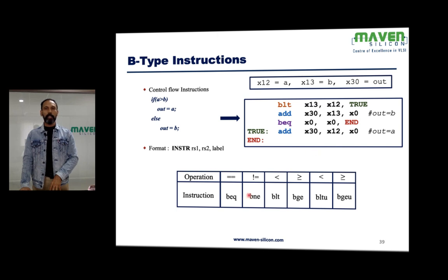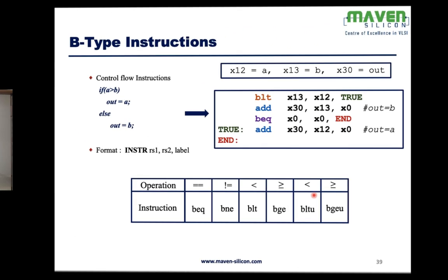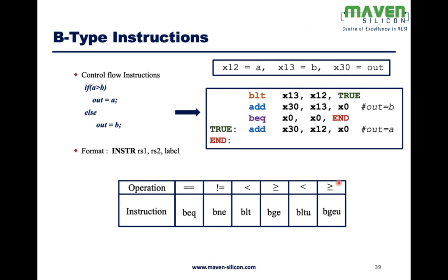As mentioned, there are different kinds of B-type instructions: branch equal, branch not equal, branch less than — there is no branch greater than, so you always swap the operands. Branch greater than or equal to, branch less than unsigned, and branch greater than or equal to unsigned are all available variants.